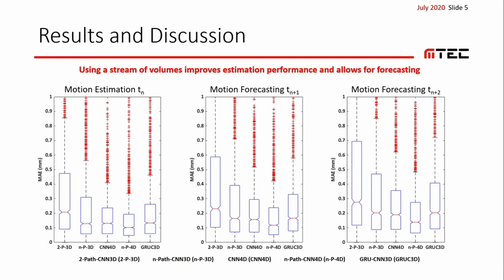This demonstrates that the spatial processing with a multipath approach followed by joint temporal and spatial processing with a 4D CNN is highly effective for the task at hand. In conclusion, using a stream of volumes improves estimation performance and allows for forecasting. Thank you for your attention, and goodbye.